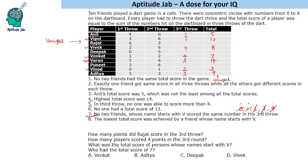Now we need to fill in 3 more people. Looking at Deepak, who has 5 points so far: he can go to 5, 6, 7, 8, or 9 maximum. But 5 is already taken by Anil, and 7, 8, 9 are all already taken. So Deepak cannot have any of those. Deepak will have a total of 6, meaning he scores 1 in the 3rd round.